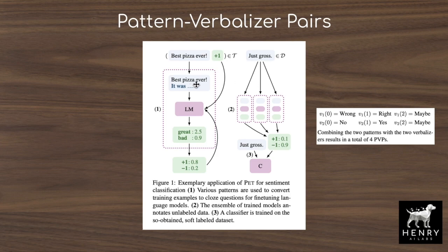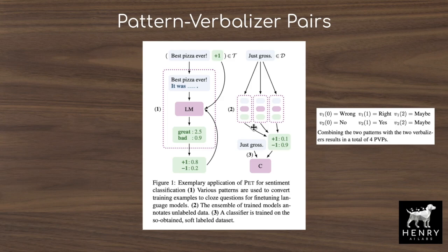Peeking ahead into the study, this is the verbalizer used for the natural language inference task, where you have the first sentence and the second sentence, and they construct the pattern 'A [MASK] B.' If the language model predicts 'no,' then it's labeled as negative; 'yes' maps to entailment; and 'maybe' maps to neutral. This shows how the verbalizer maps from the language model's predictions into labels for downstream tasks.